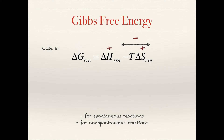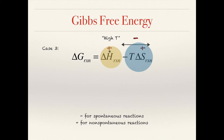Within case three, let's consider two sub-cases. At high temperature — a relative term that depends on the reaction, for example five degrees Celsius for ice melting or 800 degrees Celsius for calcium oxide production — the magnitude of the TΔS term becomes more important than ΔH. If TΔS is bigger than ΔH, ΔG will be negative because this term wins, and the reaction will be spontaneous.